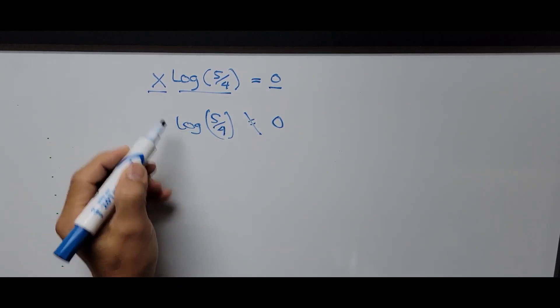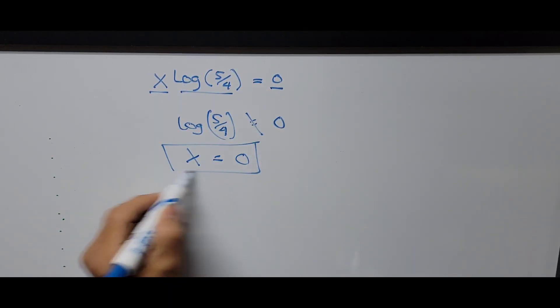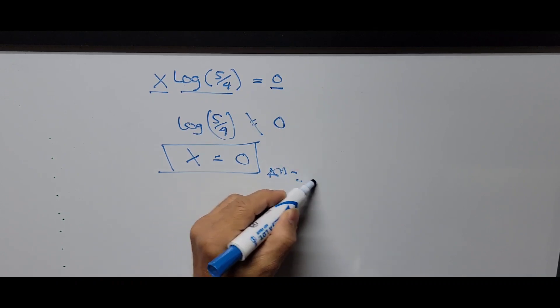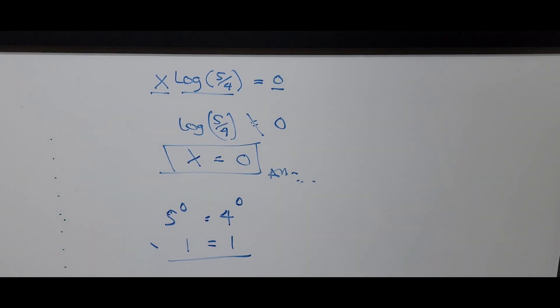That's our answer. If we go back to the original equation, 5 raised to the 0 power equals 4 raised to the 0 power. This equals 1 equals 1, since any number raised to 0 is 1.